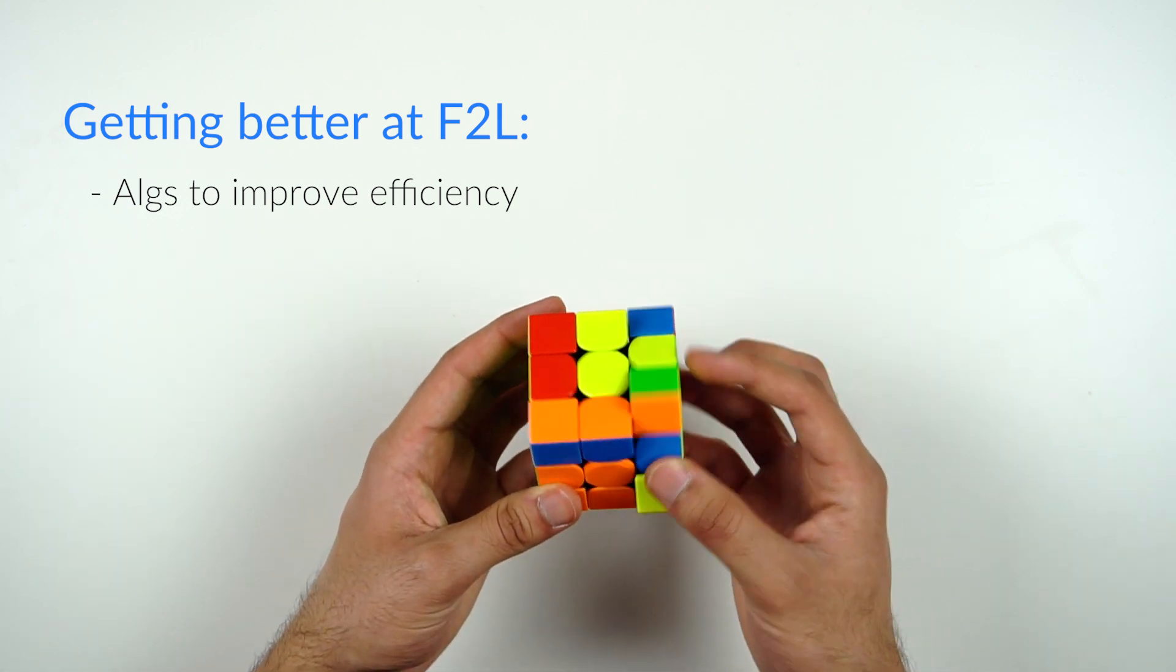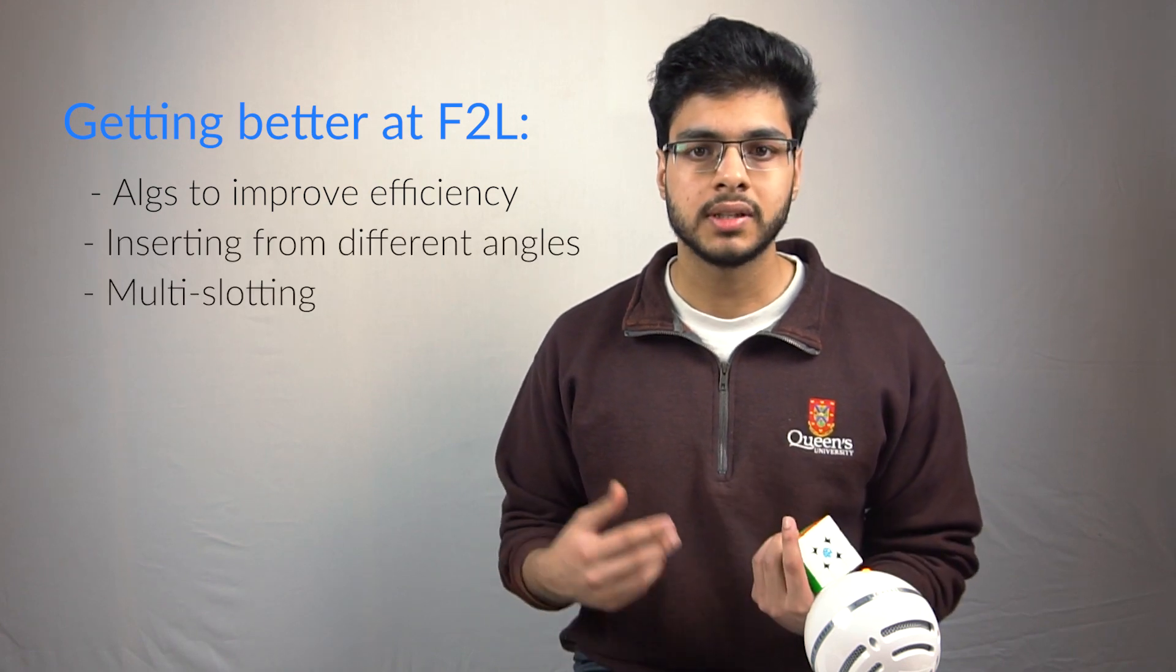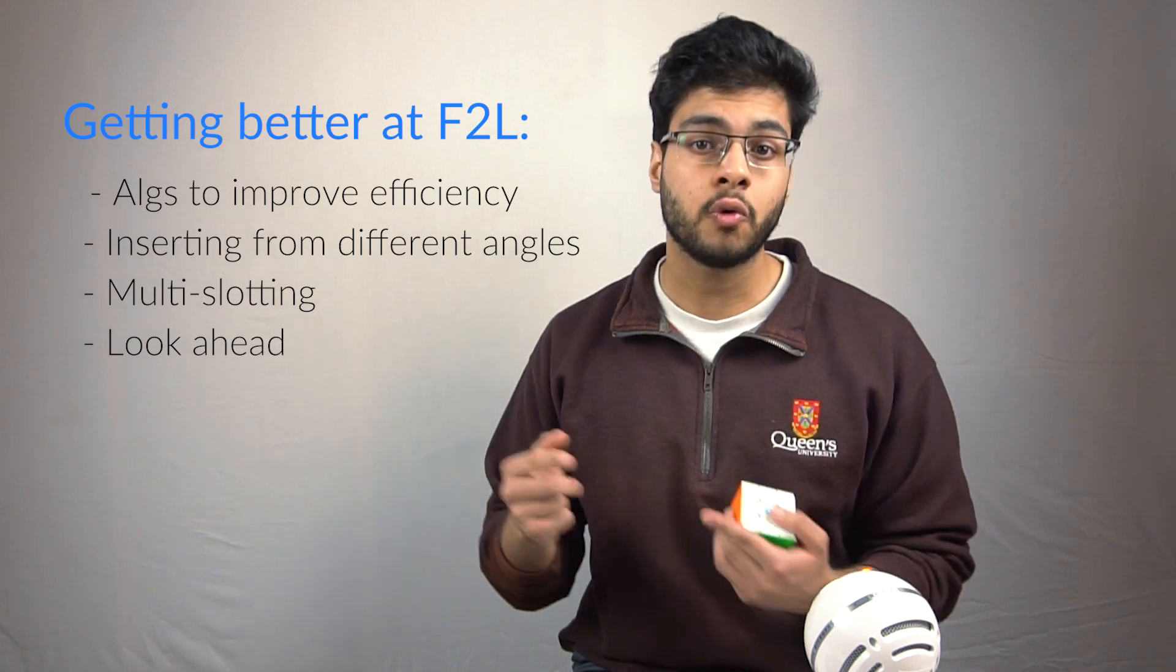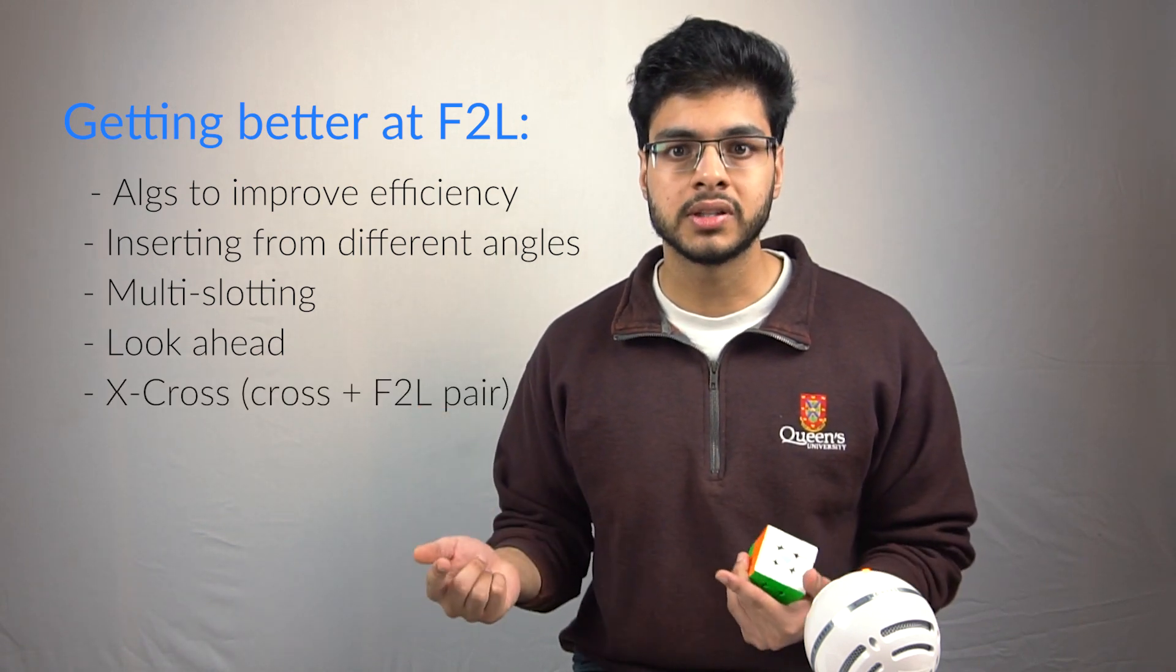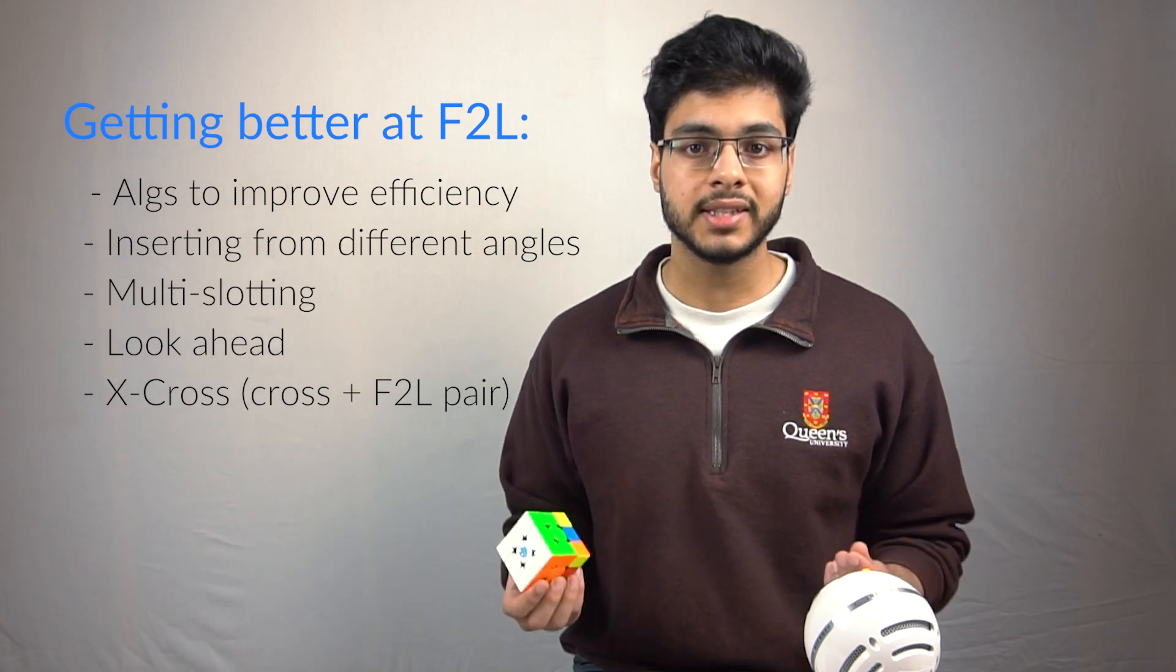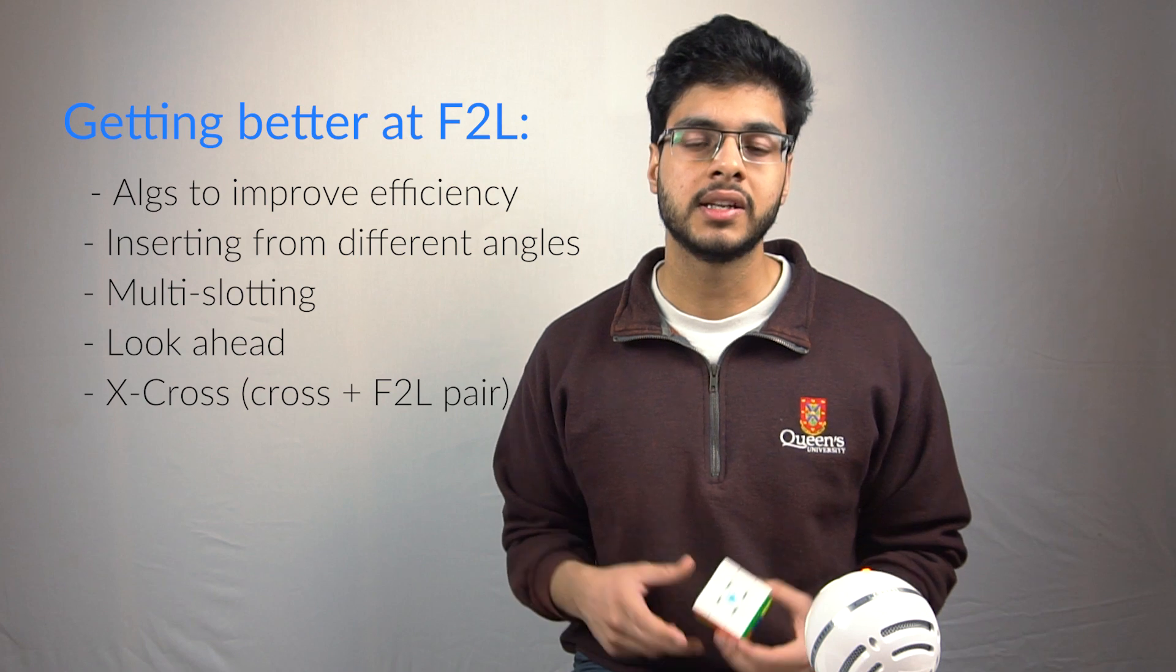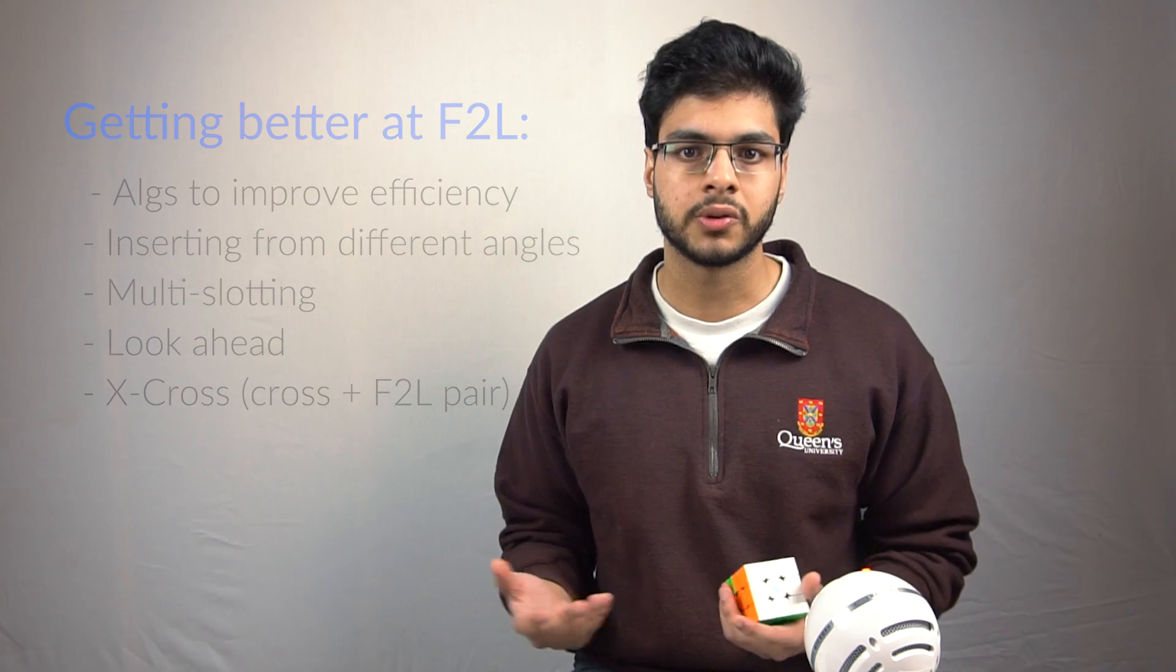And then you can also go into learning more advanced techniques, like solving multiple pairs at once, looking ahead to analyze the next case you want to solve before you're even done solving the current one, and also solving F2L pairs during the cross. This is how speedcubers manage to solve F2L within just a few seconds, compared to where a beginner may be taking 30, 40, 50 seconds on just F2L alone.